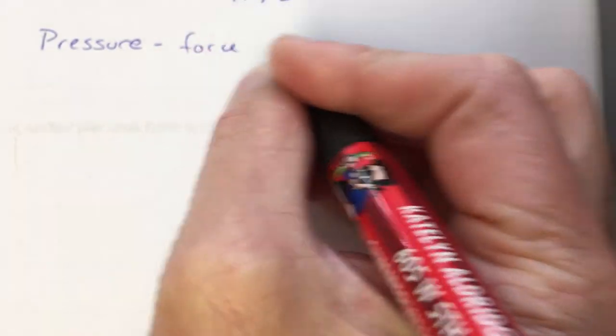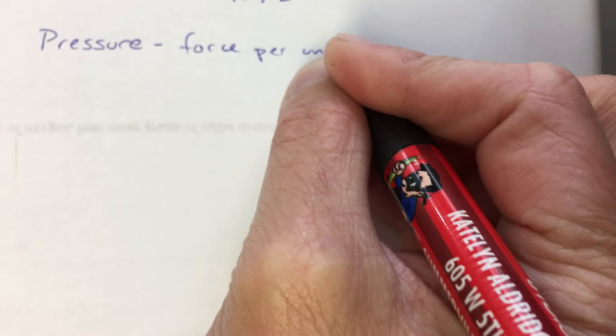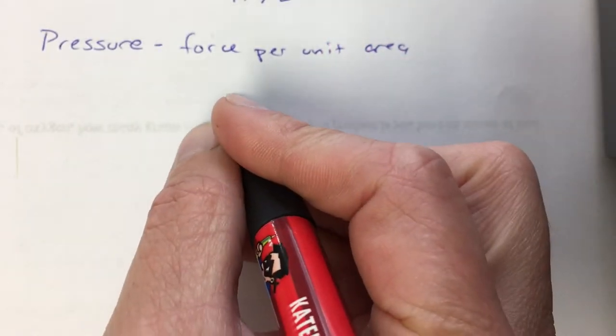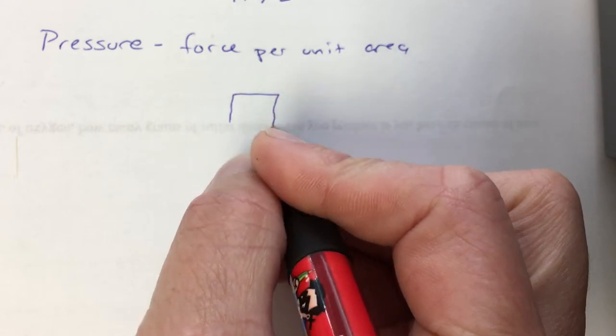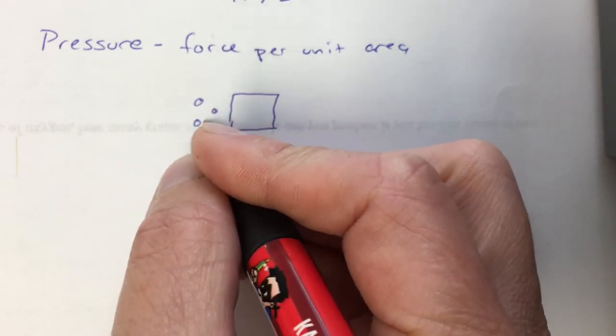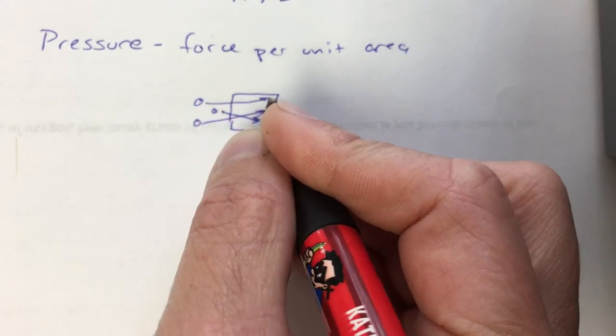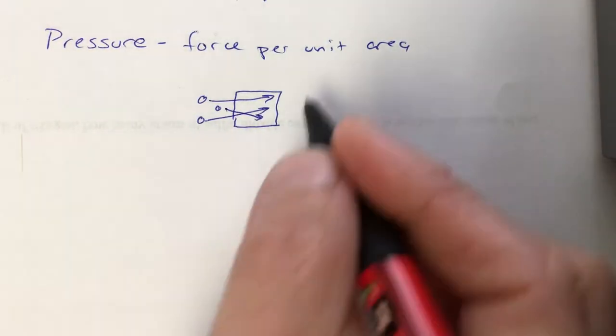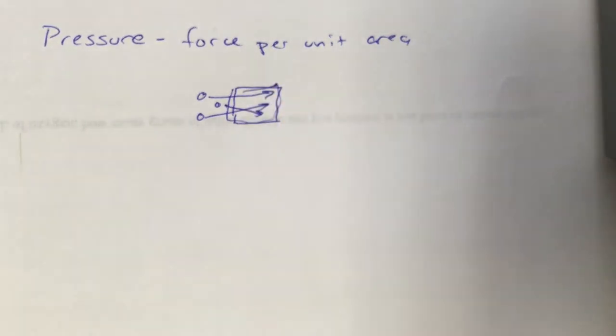Another big way that we measure gases is pressure. Part of what we said about the kinetic molecular theory is that the particles of a gas will run into each other and the walls of the container. When they run into the walls of their container, they exert a force on the walls of those containers. The cumulative effect of that, the effect of all those different particles running into the walls of the container is pressure.